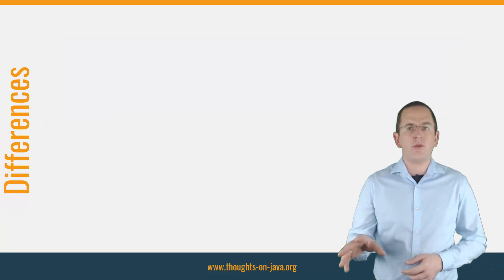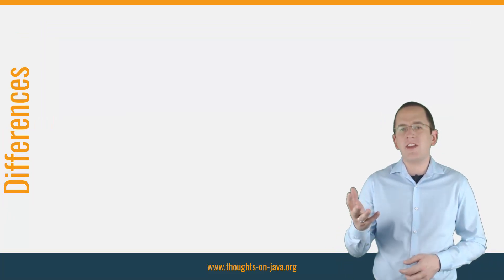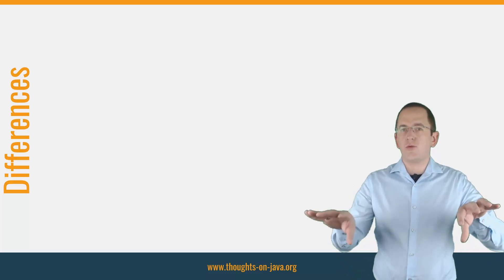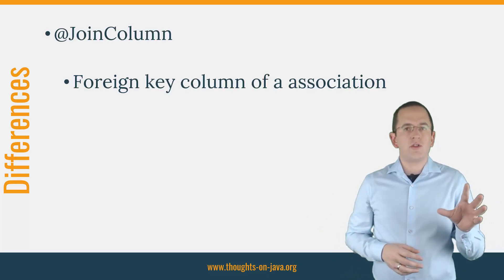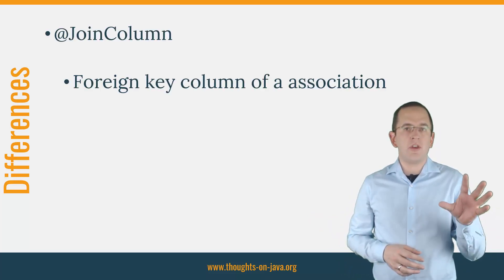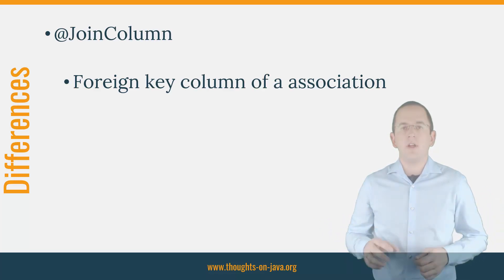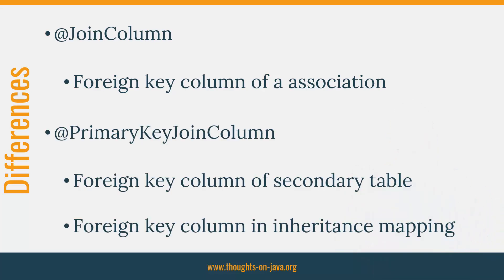The JoinColumn and the PrimaryKeyJoinColumn annotations might seem very similar, but they are used in 2 different contexts. You can use the JoinColumn annotation to map the foreign key column of a managed association. The PrimaryKeyJoinColumn specifies the mapping of the foreign key column of a secondary table or the foreign key column in an inheritance mapping that uses the joined strategy. So the annotation you need to use depends on the context in which you want to customize the mapping of the foreign key column. Let's have a look at example mappings for both annotations in the IDE.